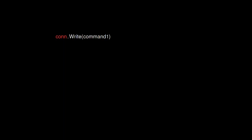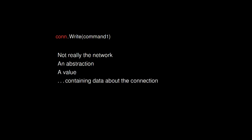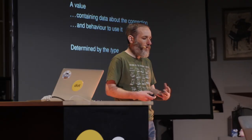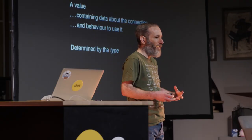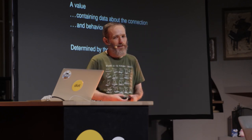So we go back and look at when we're trying to write a command to our network connection. Now, it's kind of obvious, but this con variable — it's not actually the network, right? It's an abstraction on top of that. More concretely, it's a value in Go with some data about the connection and some behavior so I can use it. And when I say it's a value with some data and some behavior, what I really mean is that this is determined by its type in Go. Now I want to change the behavior — I want to augment it so that we handle errors a bit better.